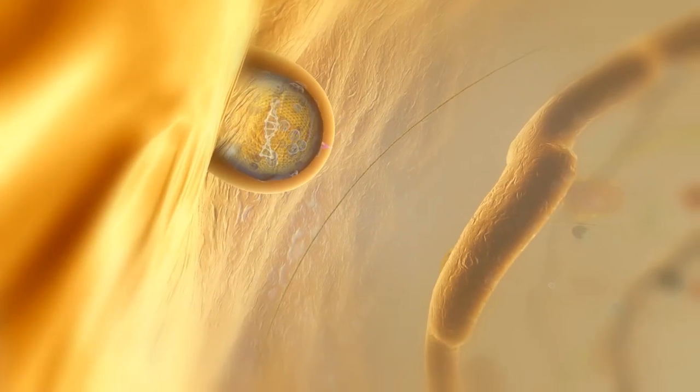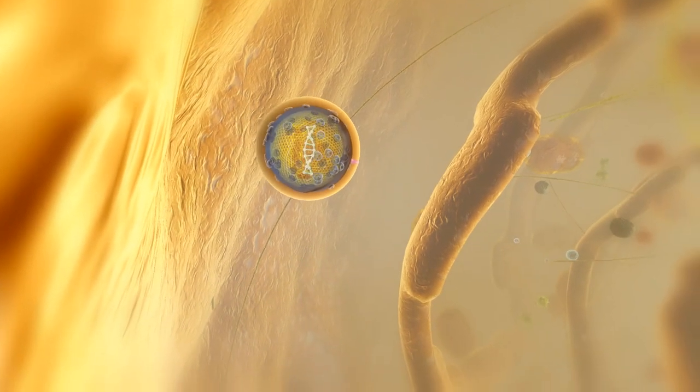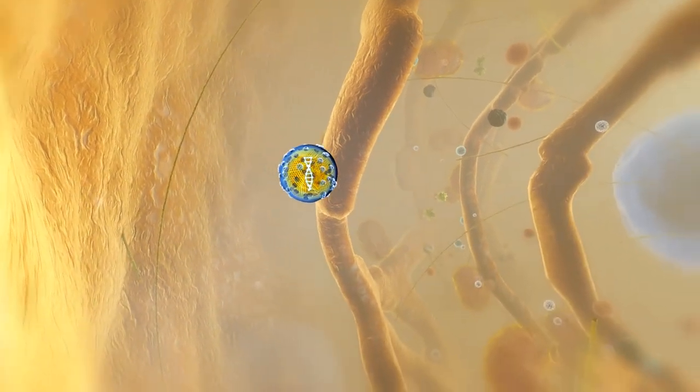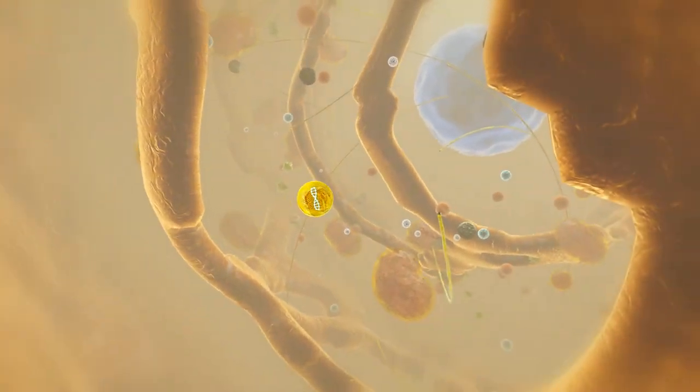Within the endosome, the vesicle surface changes, thereby enabling the disruption of the endosome and release of the vesicle contents into the cytosol.